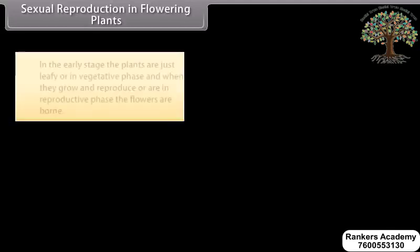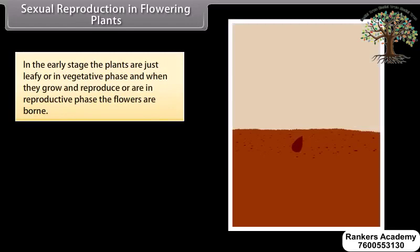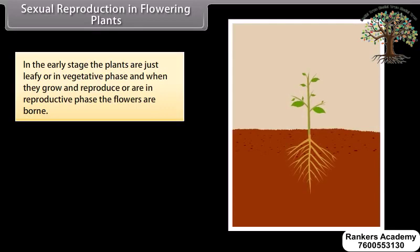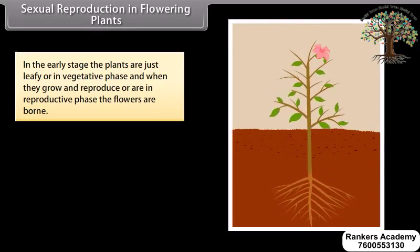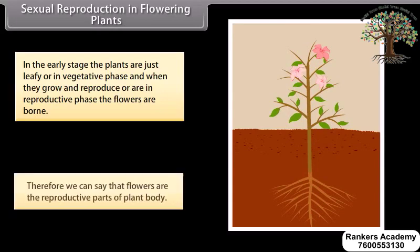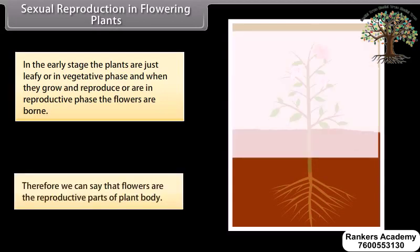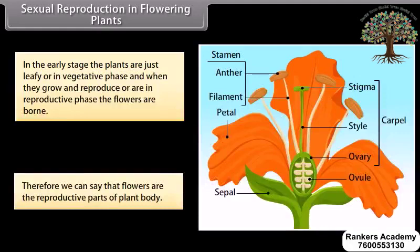Sexual reproduction in flowering plants: In the early stage, the plants are just leafy or in a vegetative phase. When they grow and are in the reproductive phase, the flowers are born. Therefore, we can say that flowers are the reproductive parts of the plant body.